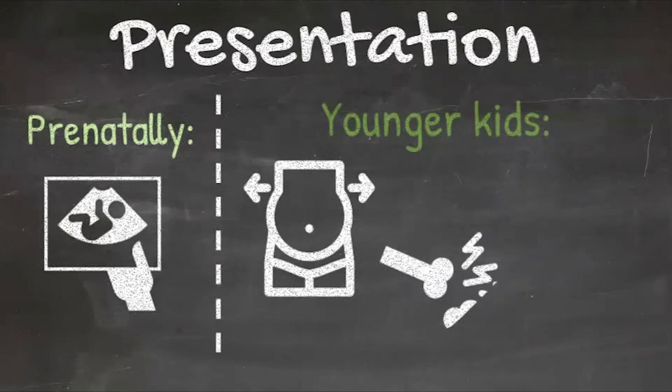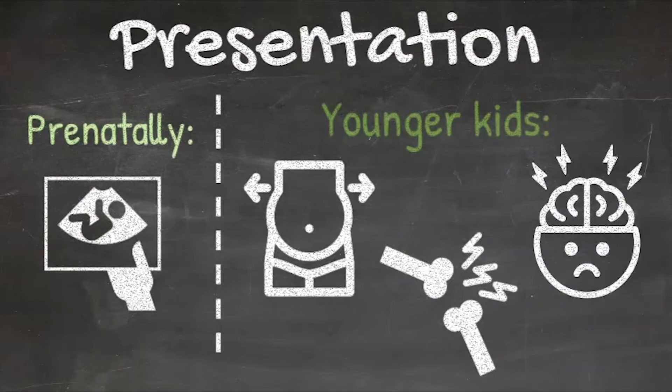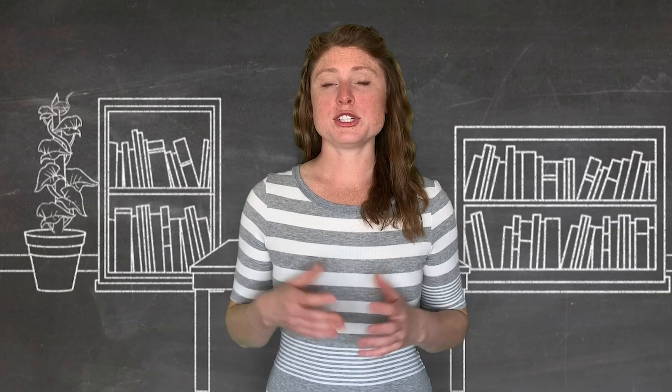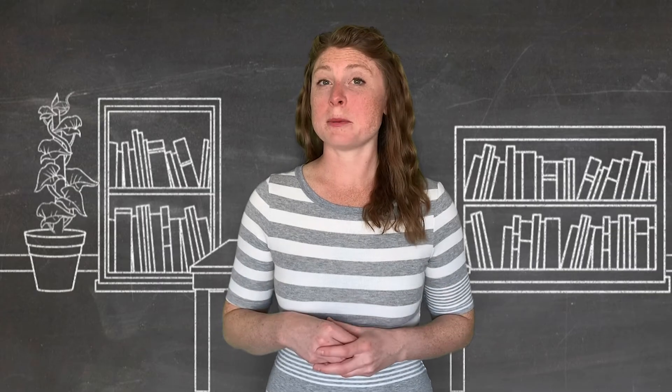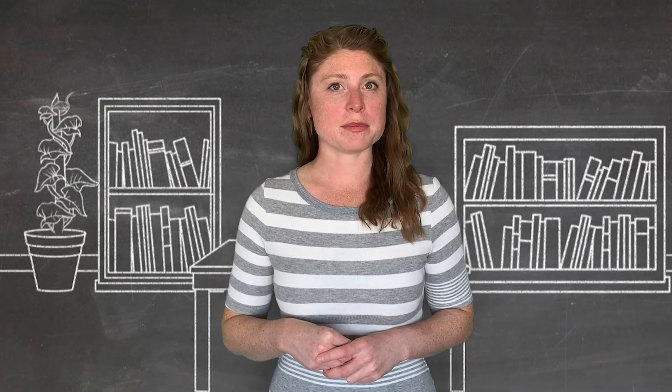Occasionally, when they have metastatic disease, they'll present with either bony pain or potentially neurologic symptoms from cord compression. If a child presents with an abdominal mass, how would you work them up?